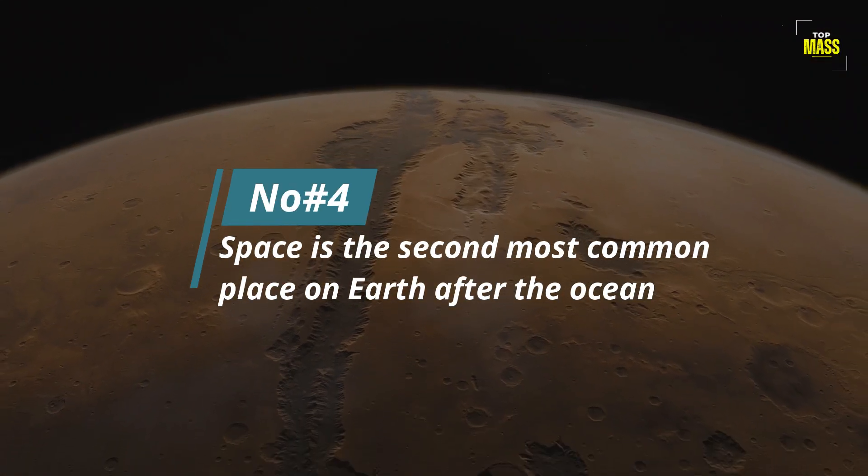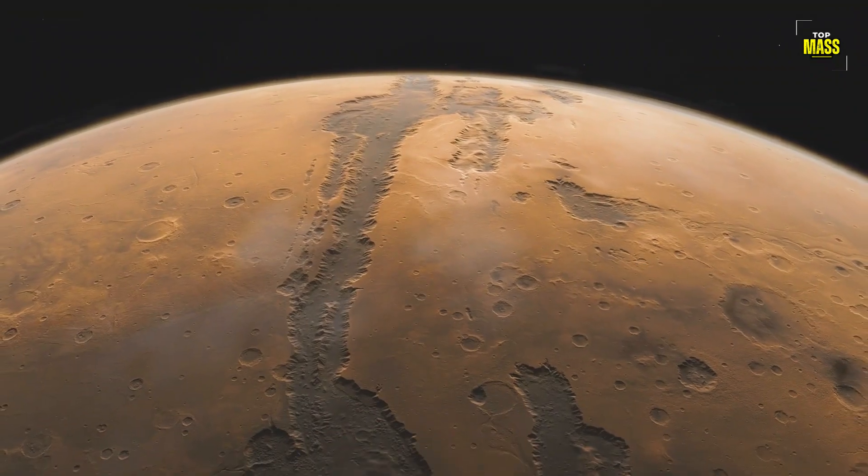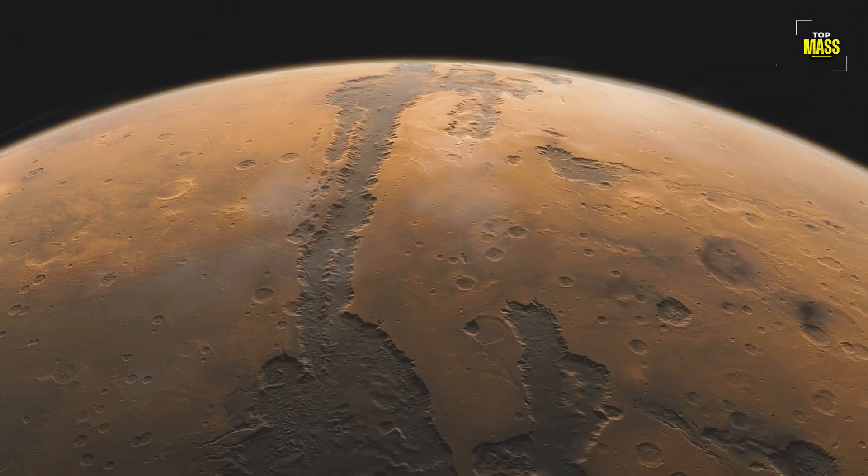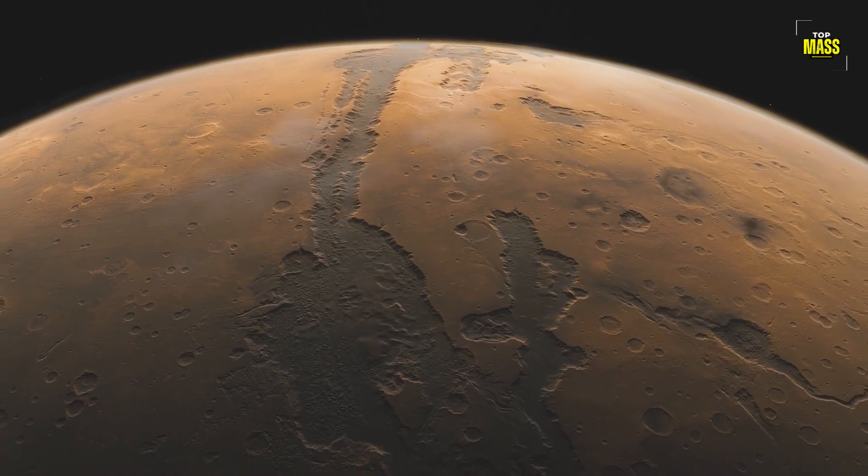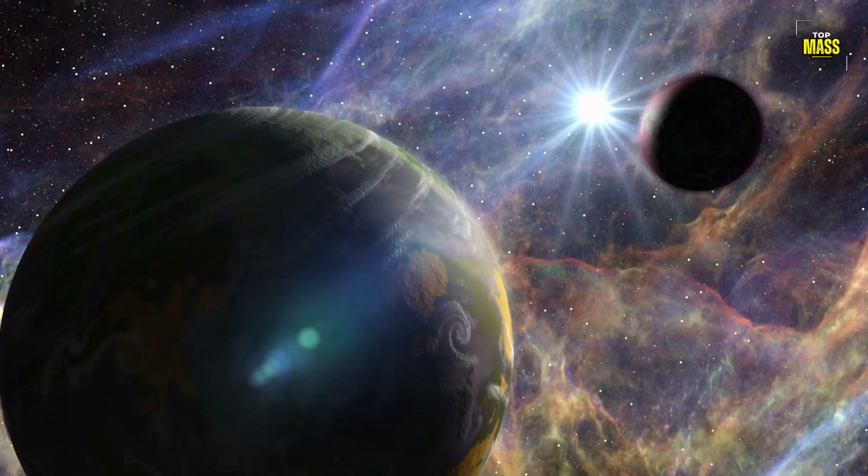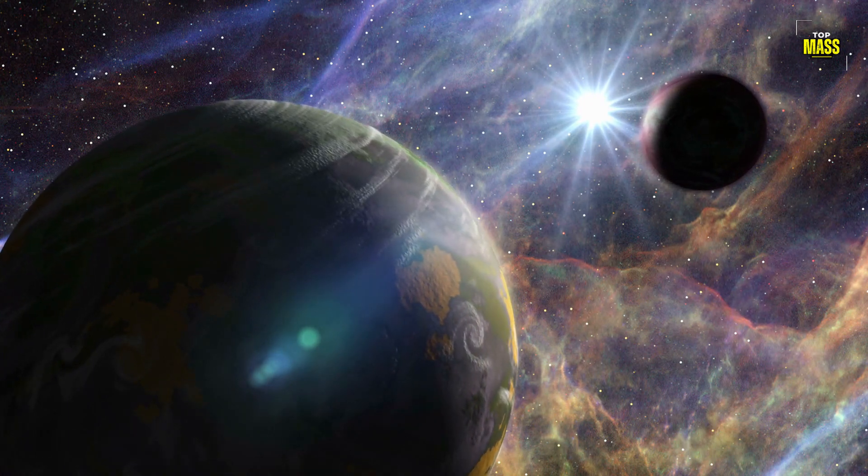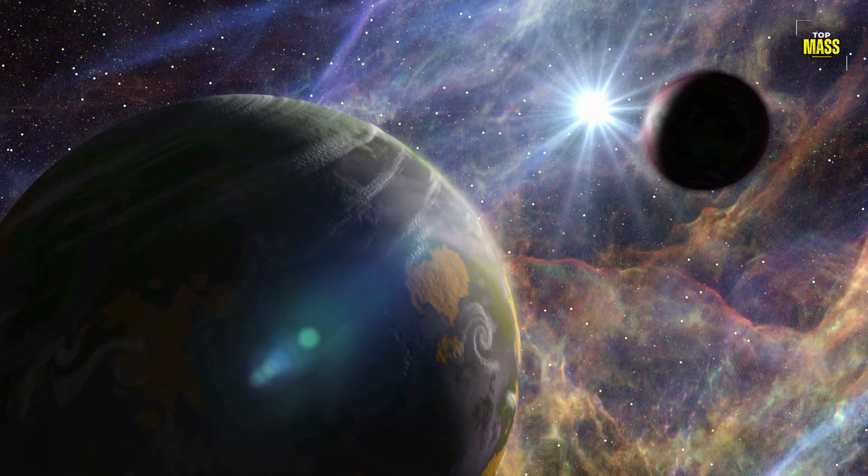Number 4. Space Is The Second Most Common Place On Earth After The Ocean. Did you know that space is the second most common place on Earth after the ocean? It might seem surprising, but it's true. Space occupies a vast area around our planet and beyond, making up an enormous part of our universe.